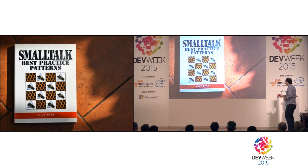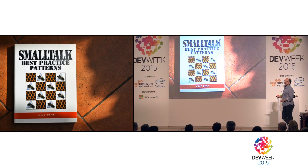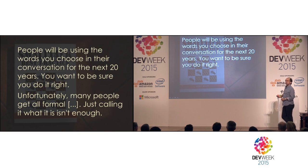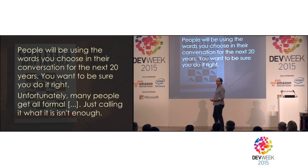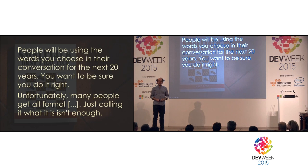One of my favorite programming books is Smalltalk Best Practice Patterns by Kent Beck — it's a very well-written book with good advice, hitting on two levels: its structure, content, and style. He spends time talking about naming and makes the point that people will be using the words you choose in their conversation for the next 20 years, focusing on classes and particularly the roots of class hierarchies.